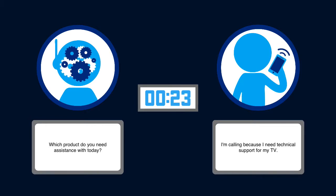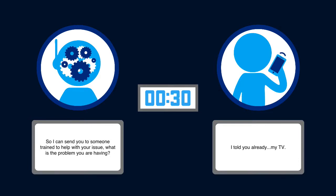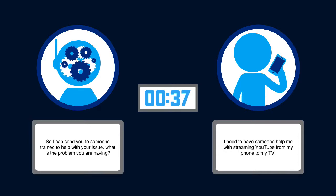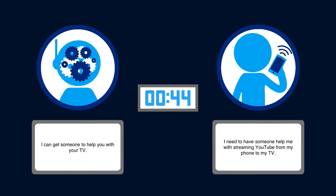The system then asks: which product do you need assistance with today? The caller responds: I told you already — my TV. The system continues: so I can send you to someone trained to help with your issue, what is the problem you are having? The caller says: I need to have someone help me with streaming YouTube from my phone to my TV. The system replies: I can get someone to help you with your TV. Please hold while I transfer your call to a representative.